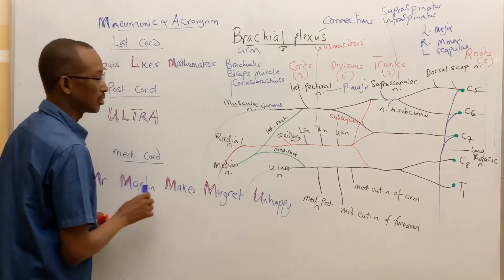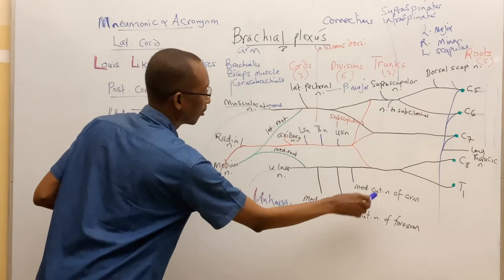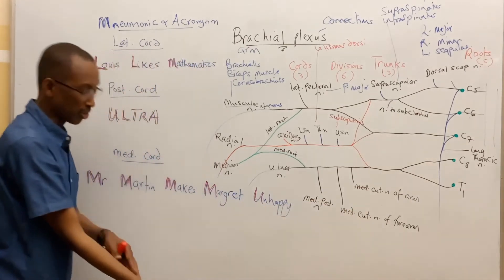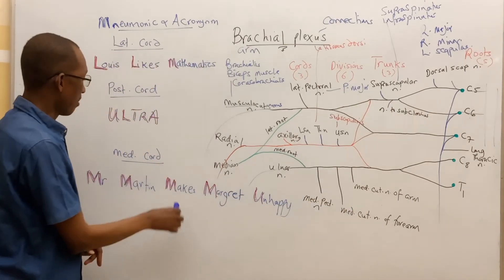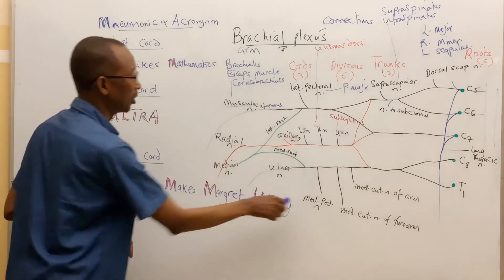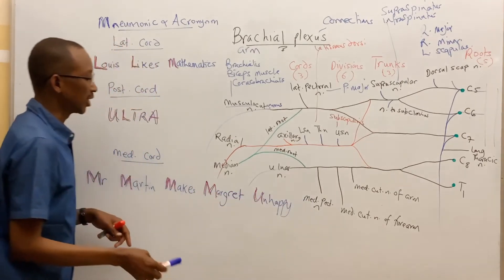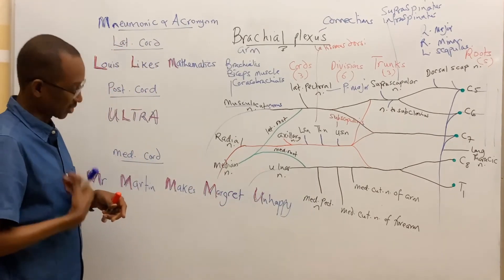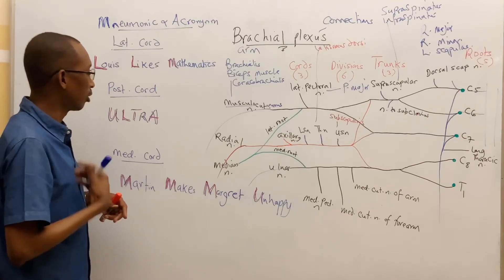Martin, M for Martin, here M for medial cutaneous nerve of the forearm, supplying the skin of the medial side of the forearm. Makes, M for medial pectoral nerve, which is a nerve that supplies the pectoralis major muscle and the minor on the anterior side of the chest.